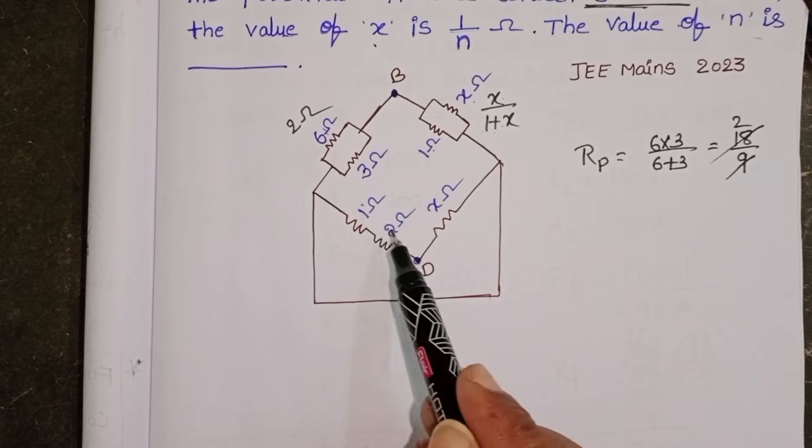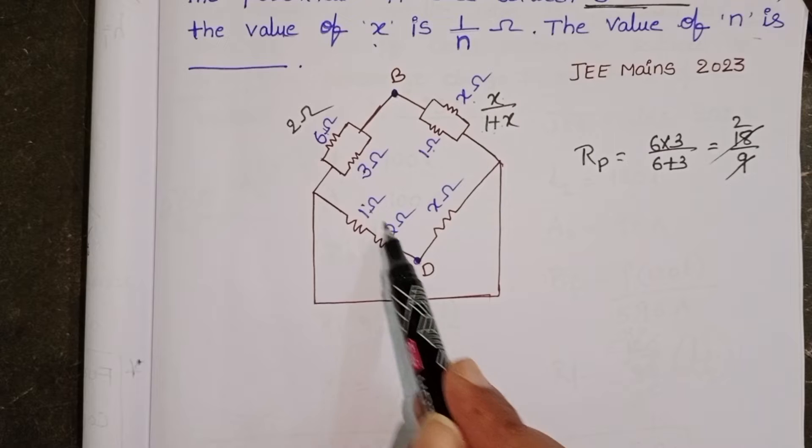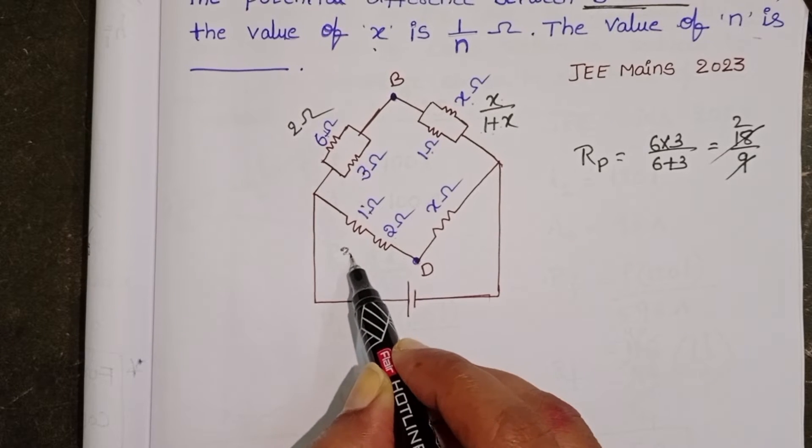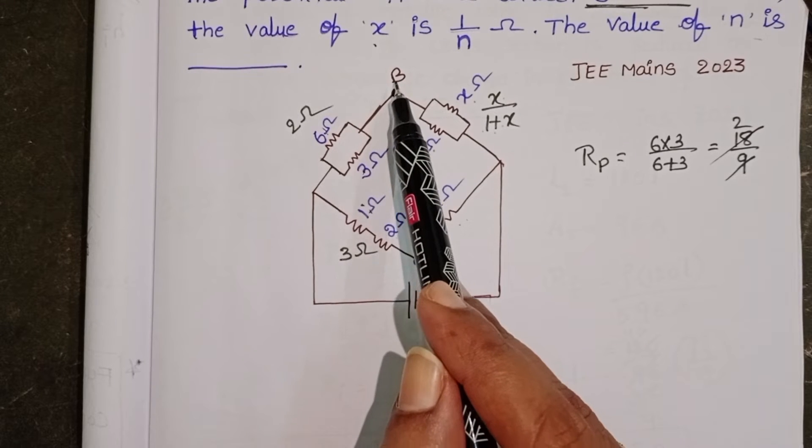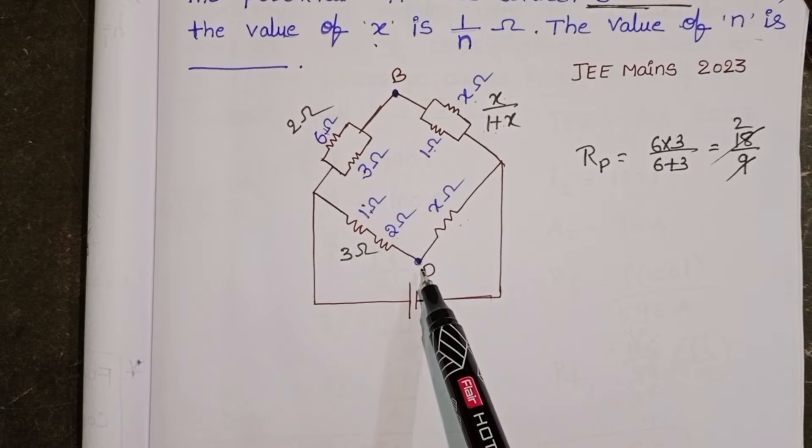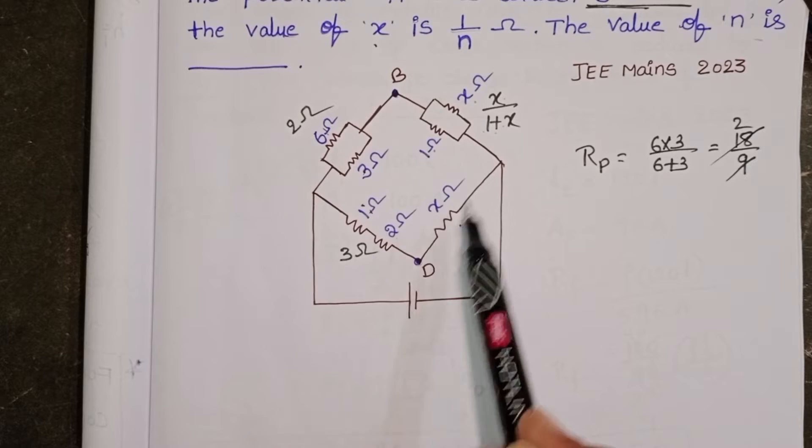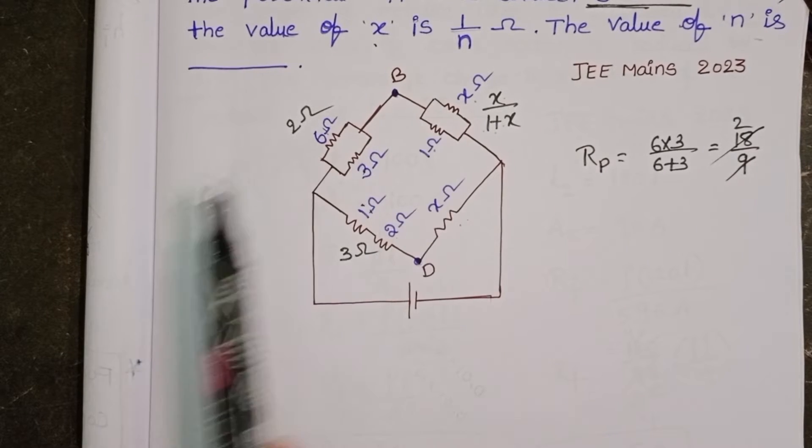Now these two resistors are in series: 1 plus 2 equals 3 ohm. And here resistance is X ohm. There is no flow of electric current through B to D points. This is called a balanced Wheatstone bridge.